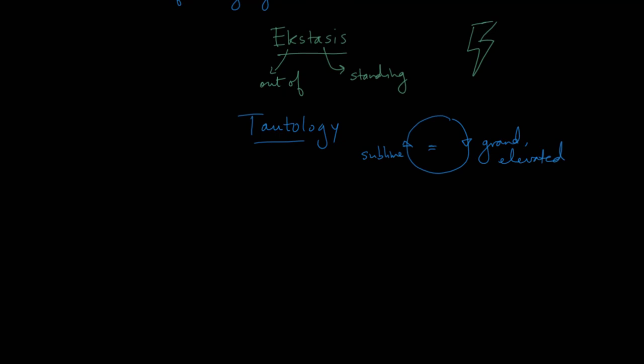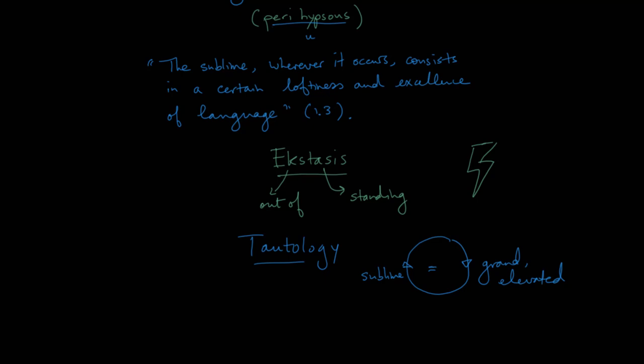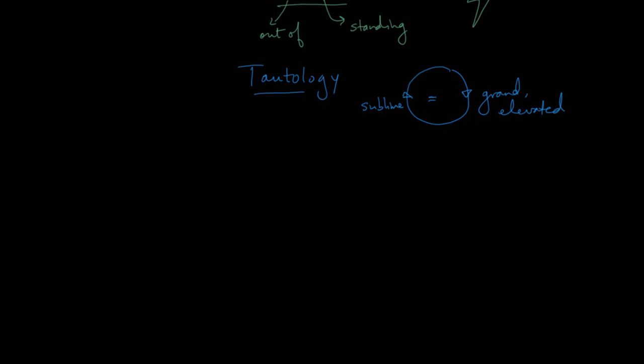And you can see this problem also in Longinus' definition, close to the top here, where he says the sublime, wherever it occurs, consists in a certain loftiness and excellence of language. Well, what is that loftiness? What is that excellence? We're really dealing with a receding horizon here, because every time we say the sublime is this, then we say, well, what is this? How do you define that? And that's one of the difficulties that Longinus experiences.